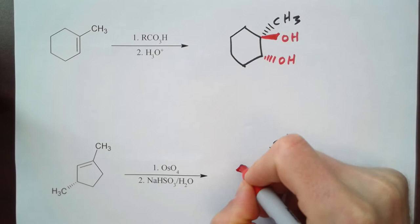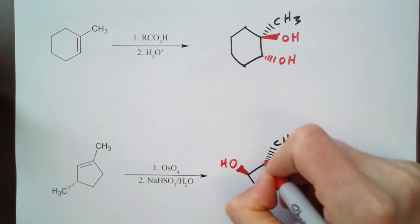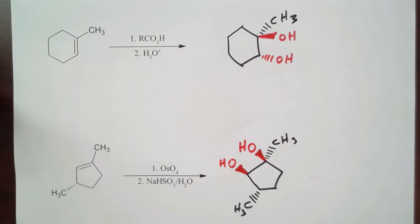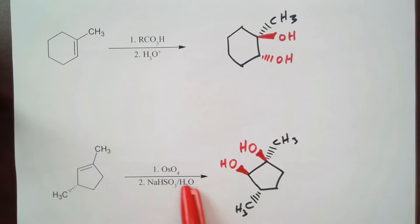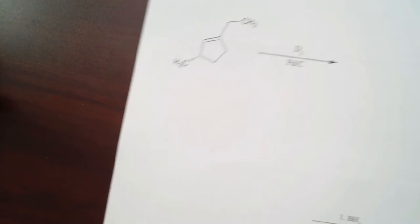So then I'm going to put both of those hydroxyl groups coming off of the same side of the ring because we get syn addition. Remember the osmium tetroxide gives us a five-membered ring which adds both oxygens on one side of the double bond, and then in the second step we get rid of the osmium and we convert these into alcohols. Let's look at two more questions.